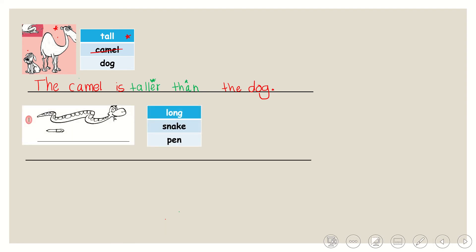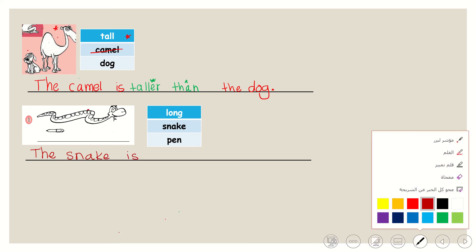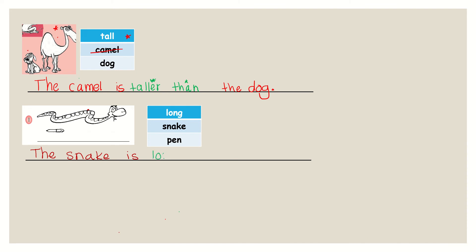Let's see the sentence. We have long. We have snake. This is the snake. And we have pen. Here is pen. Who is long here? Who is long here? The snake, right? So I will start with the snake. The snake is what?